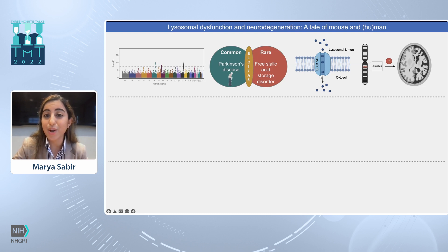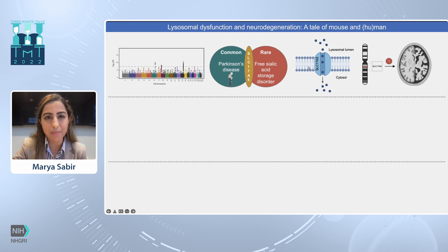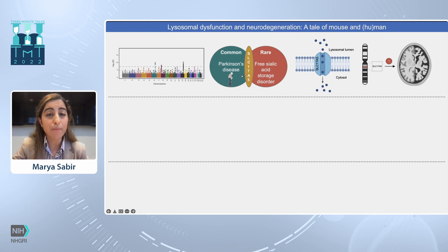SLC17A5 encodes a lysosomal transmembrane transporter that allows a molecule called free sialic acid to be exported from the lysosome into the cytosol. But how this specific gene leads to a neurodegenerative phenotype is still in question. And we asked: can we learn about SLC17A5 by developing and characterizing a mouse model of FSASD?